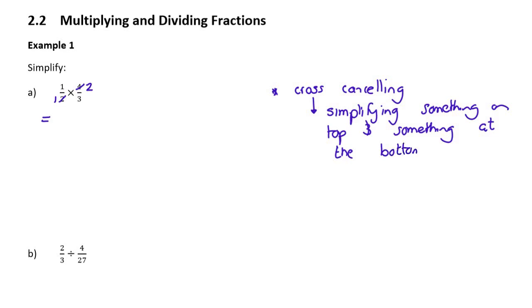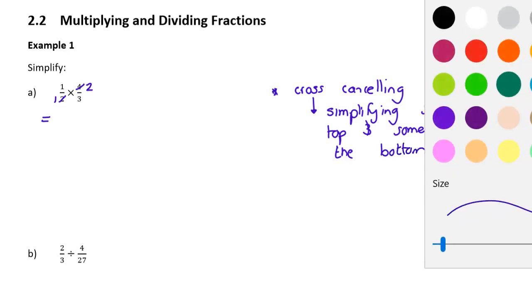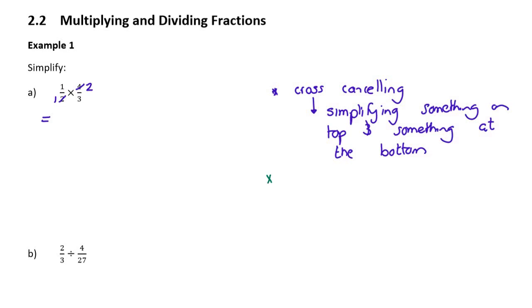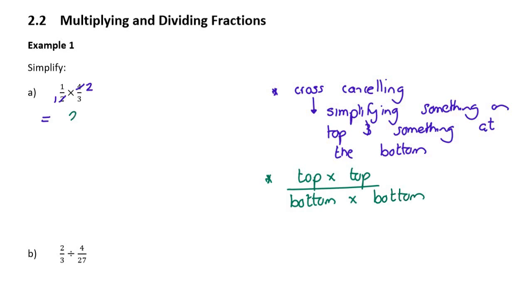Then, to complete this, we need to remember how we multiply fractions: we go top times top over bottom times bottom. So at the top of this fraction we have 1 times 2, which is 2, and at the bottom we have 1 times 3, which is 3. So two-thirds is our final answer. That's how we go about multiplying fractions.